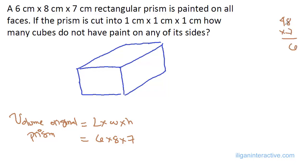6 times 8 is 48. 48 times 7. Let's see. 7 times 8 is 56, 7 times 4 is 28, plus 5 is 33, right? Hopefully. That's 336 cubic centimeters.